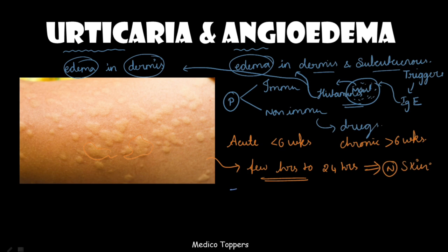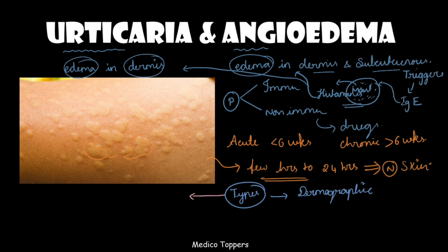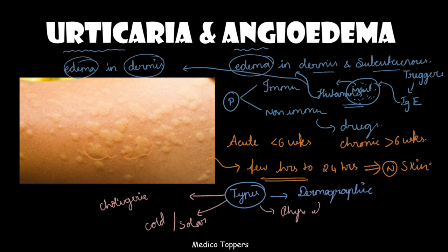Regarding the types of urticaria: dermographic urticaria occurs when writing on the skin causes lesions to appear — also called physical or pressure urticaria. Cholinergic urticaria occurs after becoming overheated due to sweat. Urticaria can also be triggered by extreme cold or extreme sun exposure. These are the different types of urticaria.